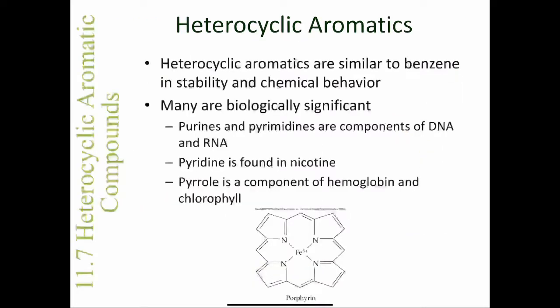All of these heterocyclic compounds are more similar to benzene in stability and chemical behavior than they are to the alkenes. Many of these compounds are components of molecules that have significant effects on biological systems. For example, purines and pyrimidines are components of DNA and RNA.